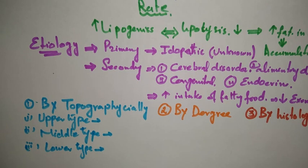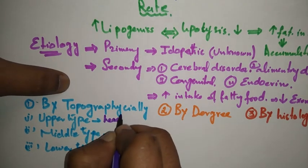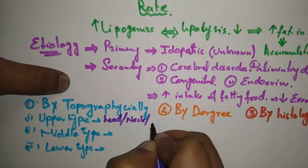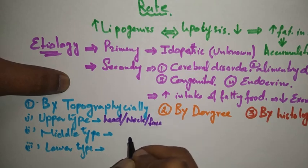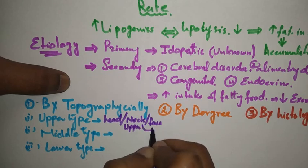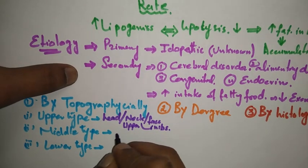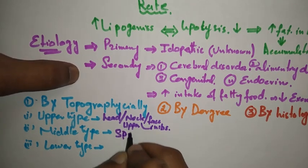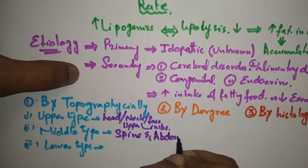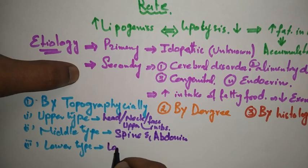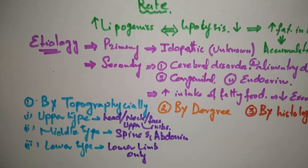Topographically, we have three types of obesity. Upper type: fat accumulates in the head, neck, face, and upper limbs. Middle type: fat accumulates in the spine and abdomen. Lower type: fat accumulates in the lower limbs only.